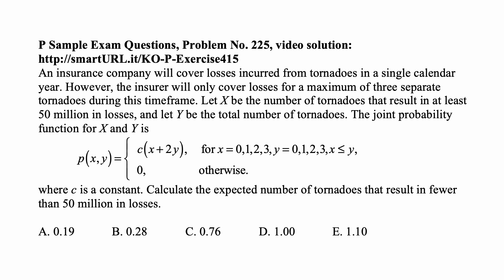The joint probability function for X and Y is C times (X + 2Y) for X equal to 0, 1, 2, 3, and Y equal to 0, 1, 2, 3, with X less than or equal to Y, and zero otherwise, where C is a constant. Calculate the expected number of tornadoes that result in fewer than 50 million in losses.